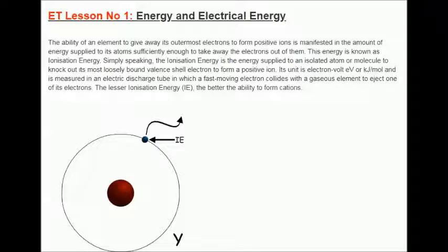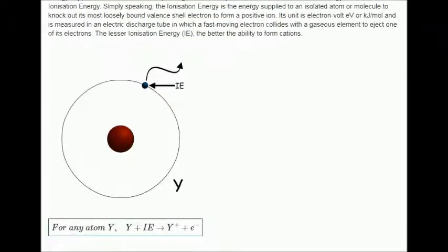The lesser ionization energy, also known as IE, the better the ability to form cations. For better clarification, please refer to the picture given here. For any atom Y, the summation of Y and ionization energy gives the following.